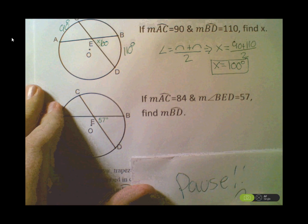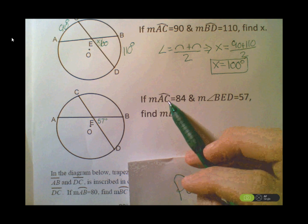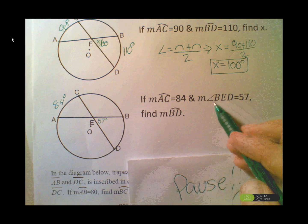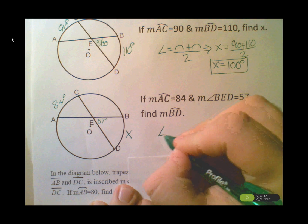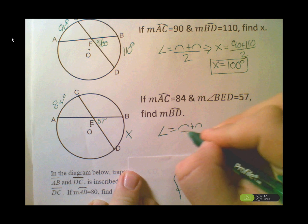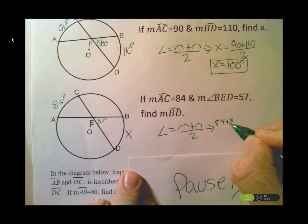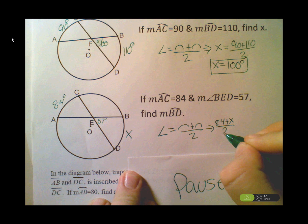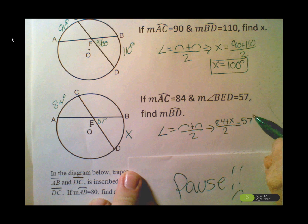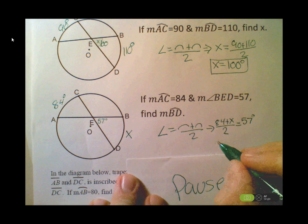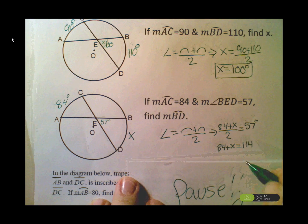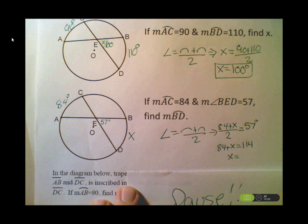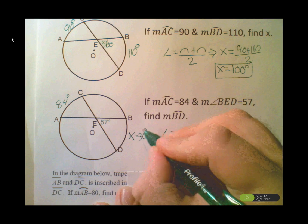Second practice problem: arc AC is 84 degrees, angle BED is 57 degrees. Find arc BD. Using the formula: angle = (arc + arc) / 2, so 57 = (84 + x) / 2. Cross-multiplying: 114 = 84 + x, so x = 30 degrees. Checking: 57 is between 30 and 84, so we're good.